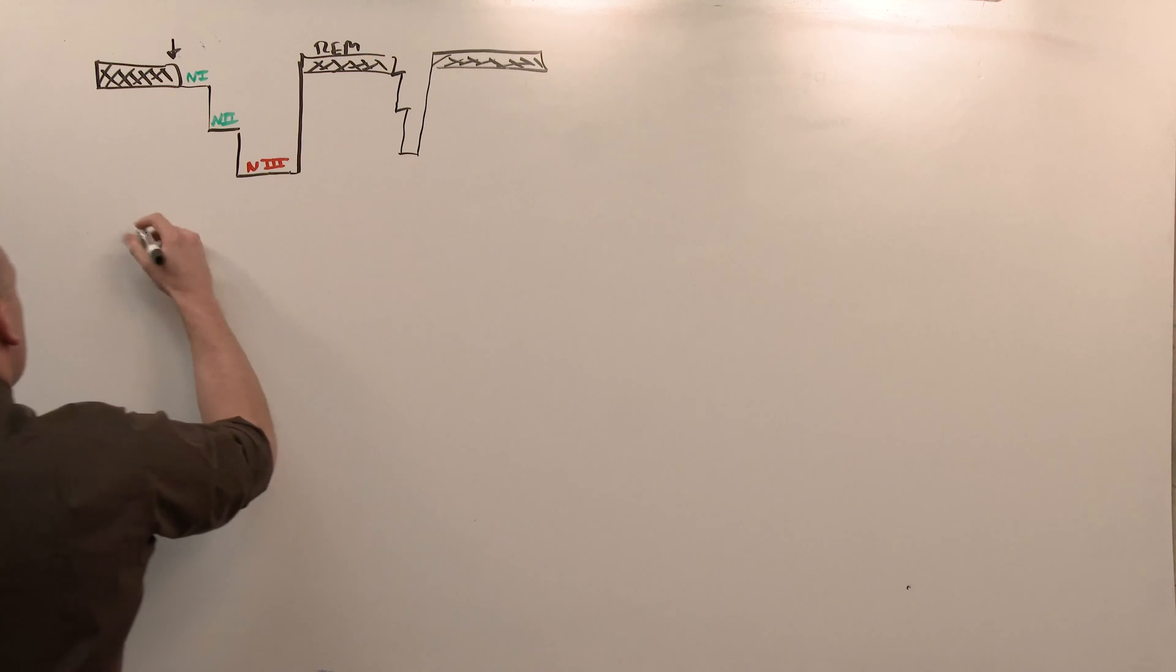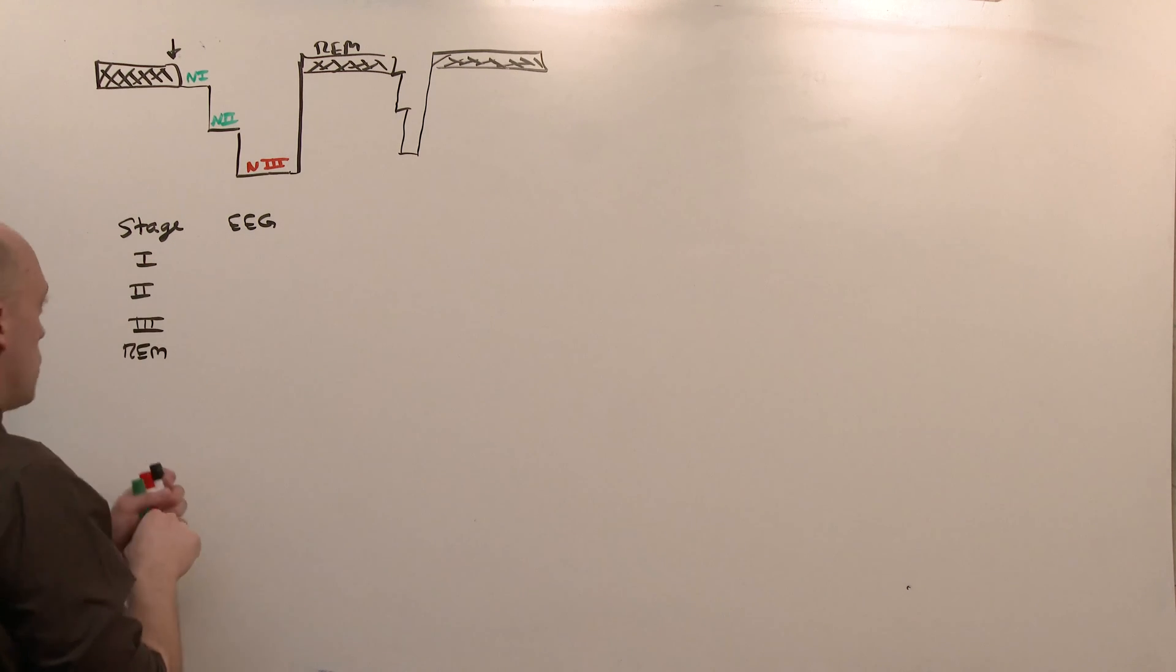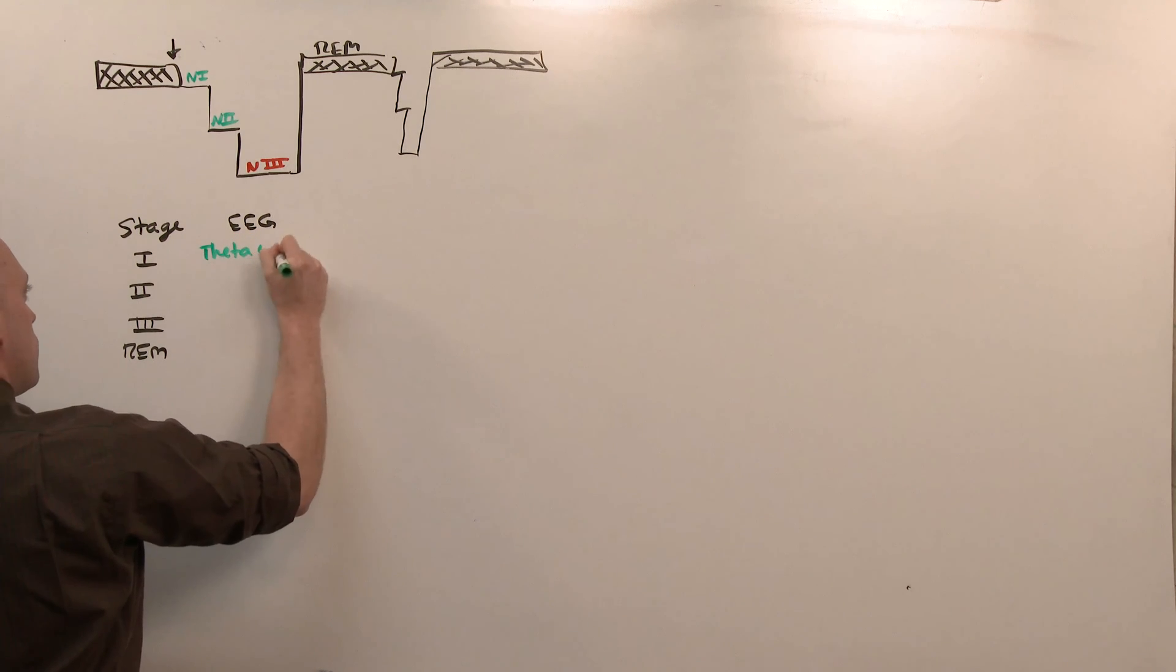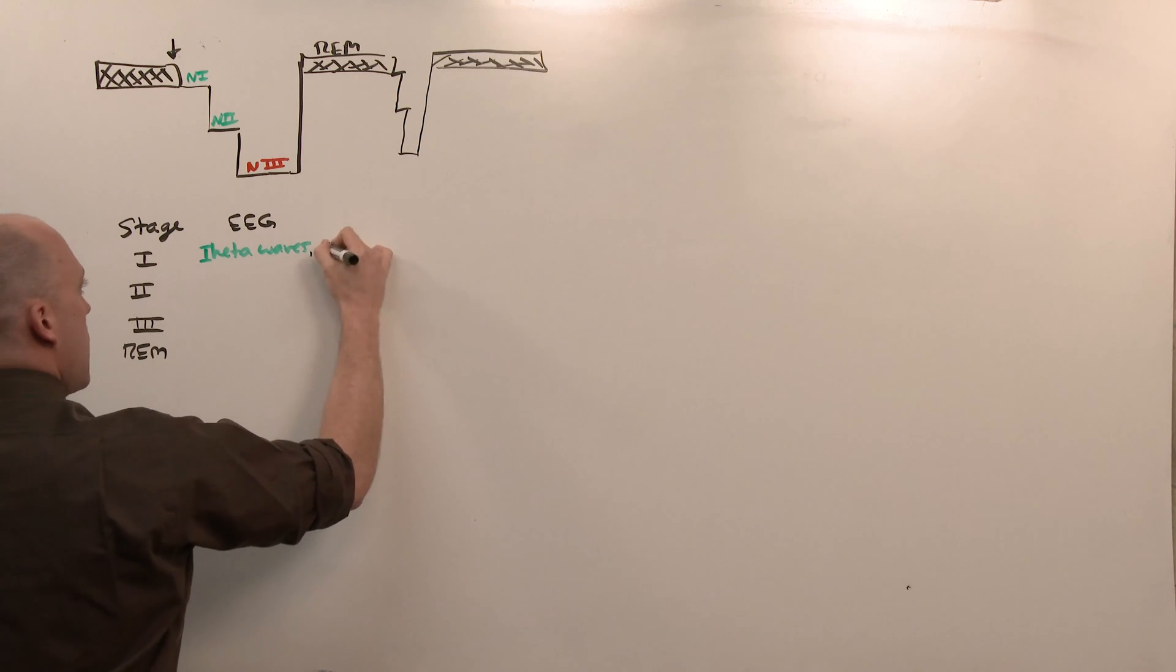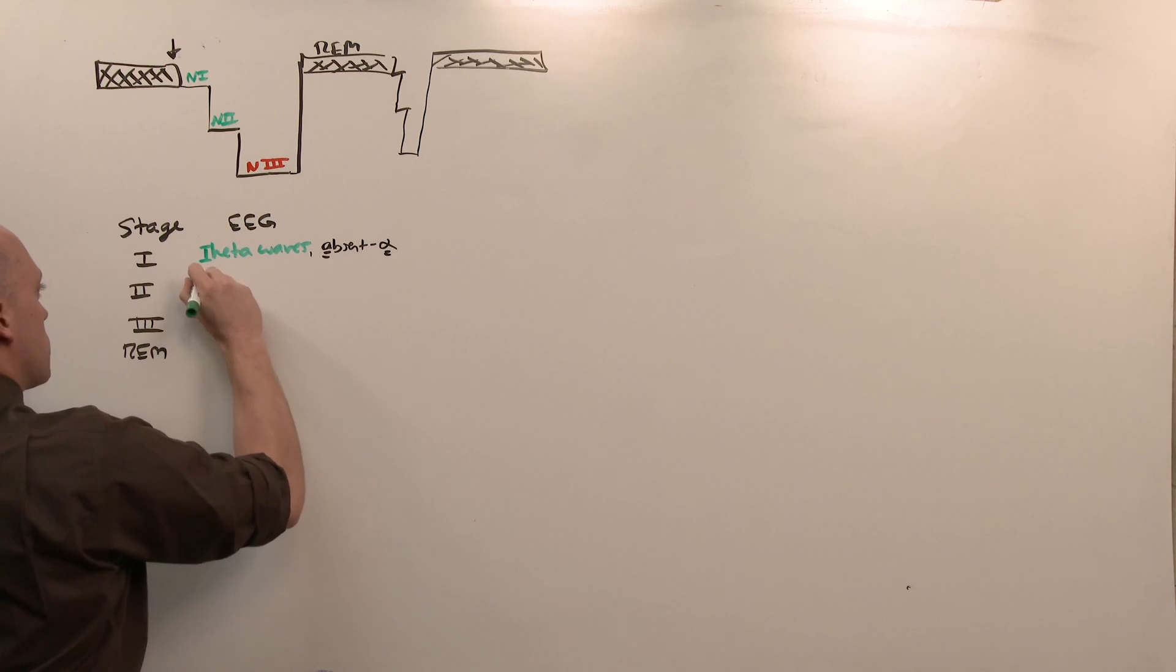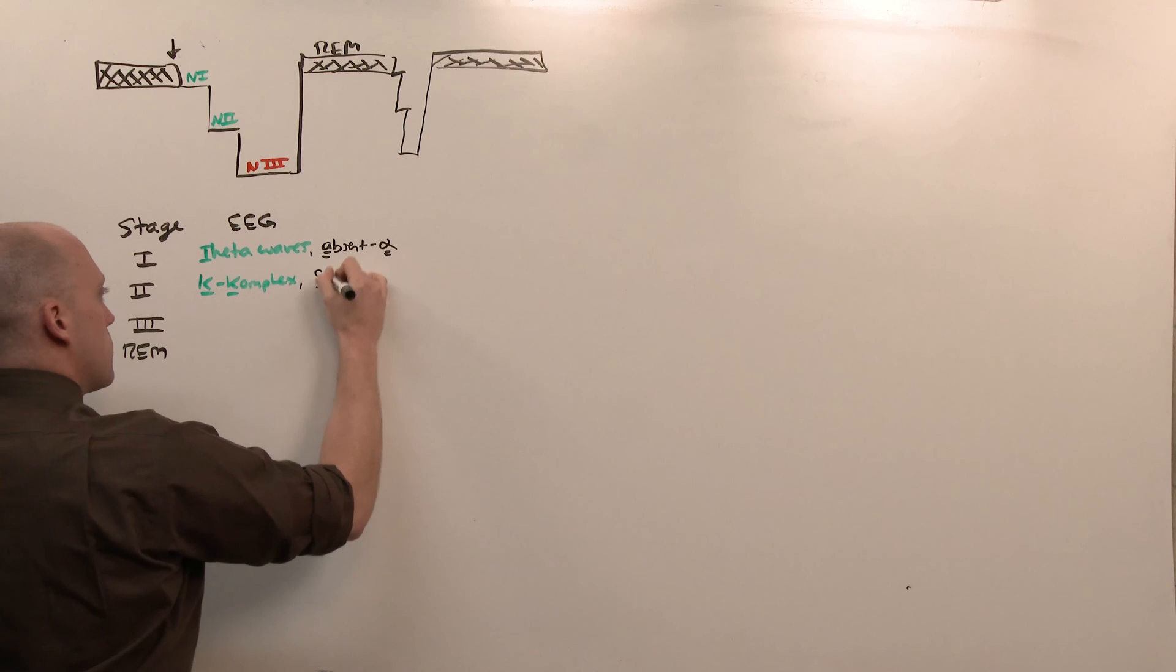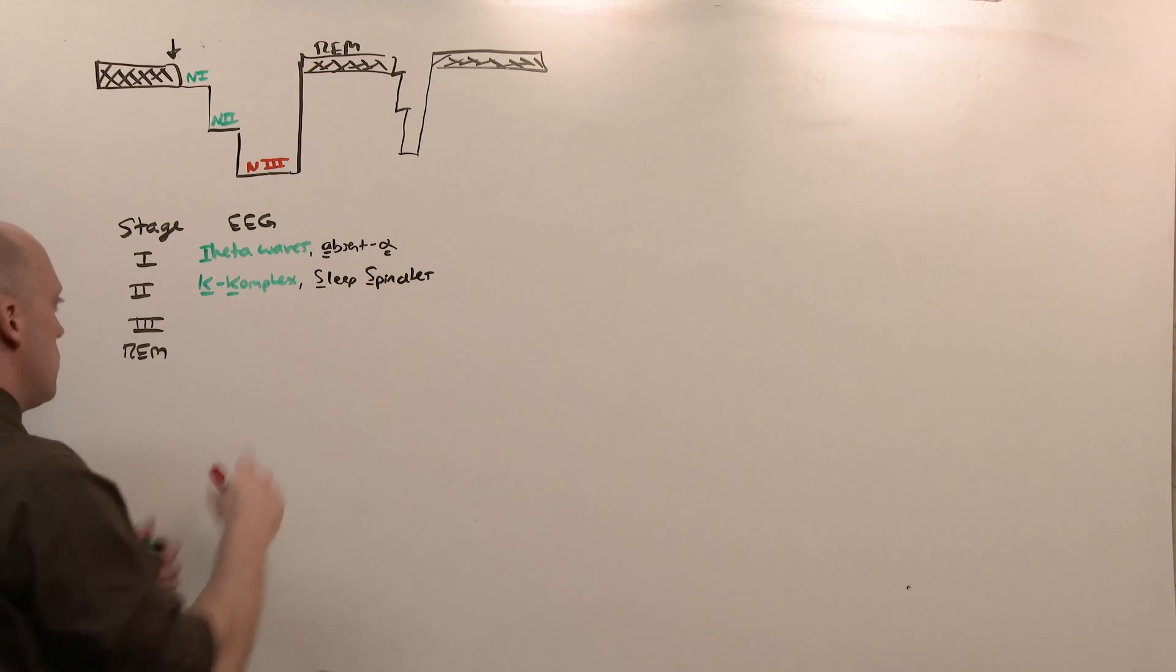We call these stages based on the EEG findings. This makes it great question fodder because it's a one-to-one association. In stage one, what you'll see are theta waves. You just add a bottom underline to that T - stage one, theta waves, the T of theta becomes an I. There are absent alpha waves. In stage two, what you'll see are K complexes - notice the letter change to make the alliteration work - and sleep spindles. Stage three, delta waves.